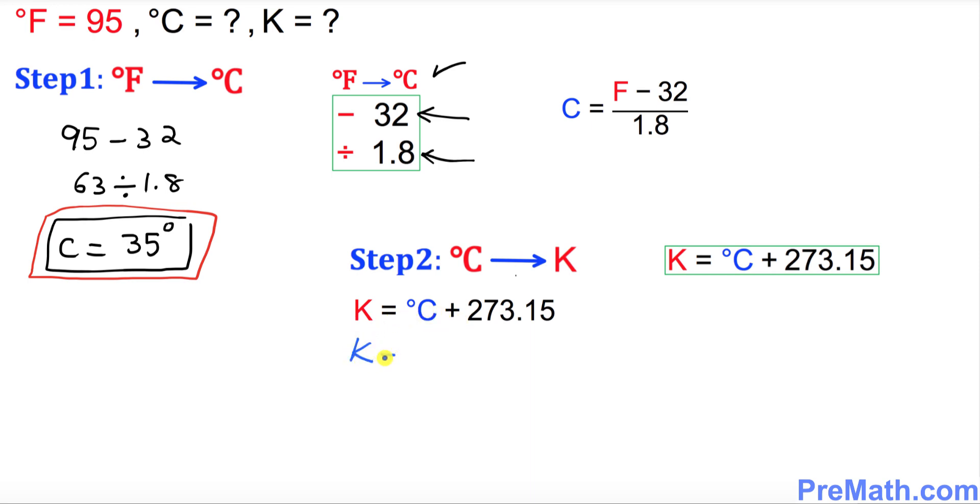So we're going to have K equals C, which as you can see over here is 35. You just put down 35 plus 273.15, and if you add them, that is going to give you 308.15 as the K value.